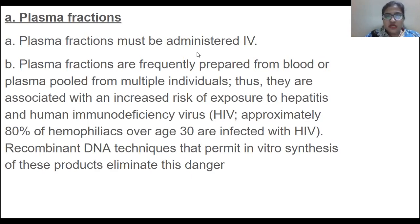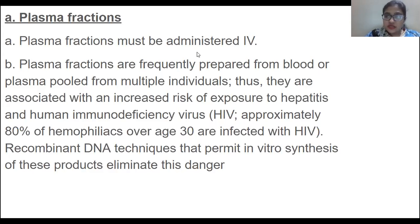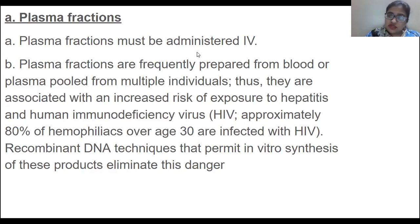Plasma fractions are frequently prepared from blood or plasma pooled from multiple individuals. While this is beneficial, it can introduce antigens into another person's body. Thus they are associated with an increased risk of exposure to hepatitis and HIV. Recombinant DNA techniques that permit in vitro synthesis of these products eliminate this danger.